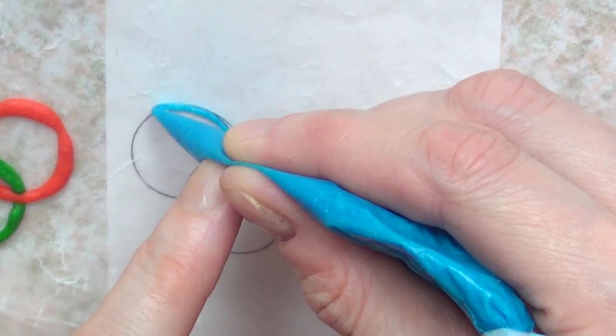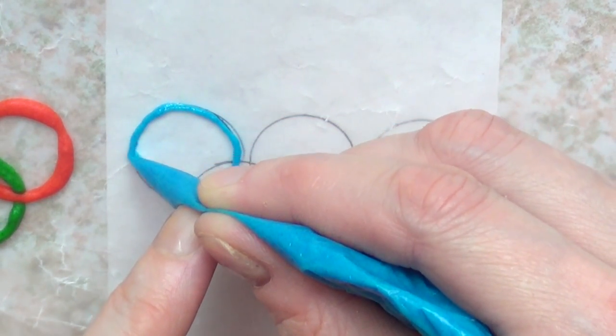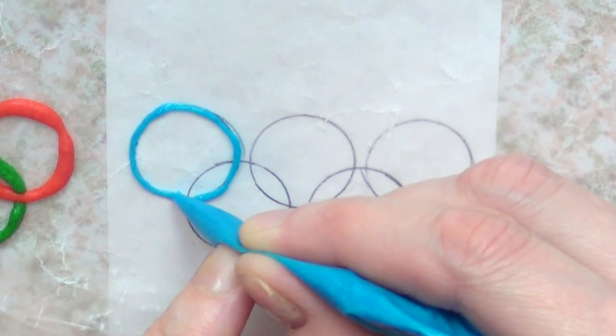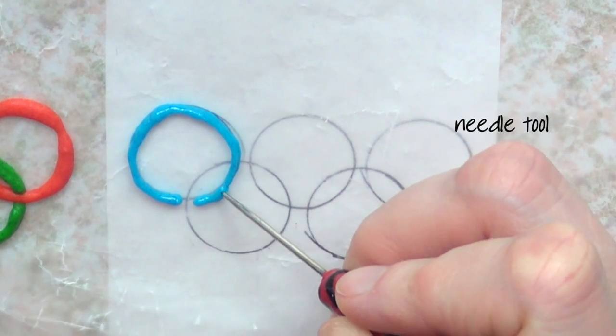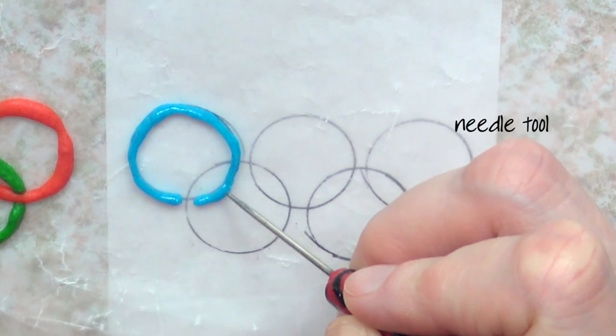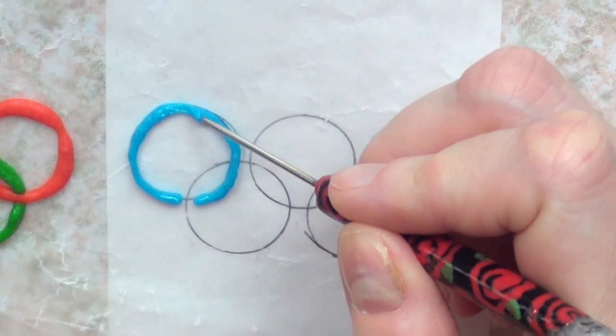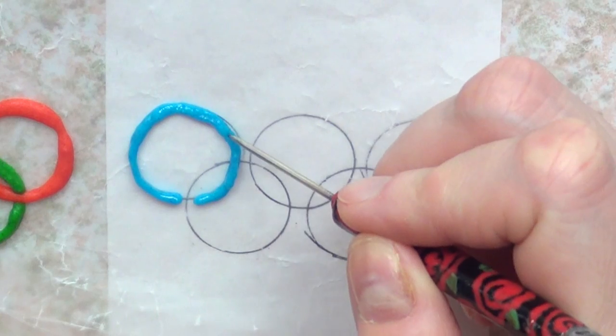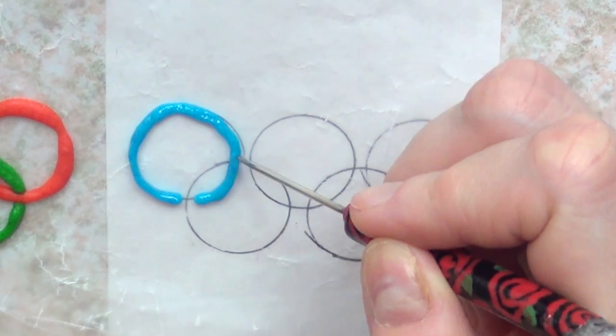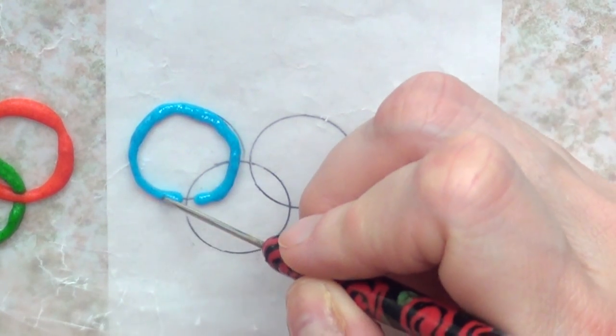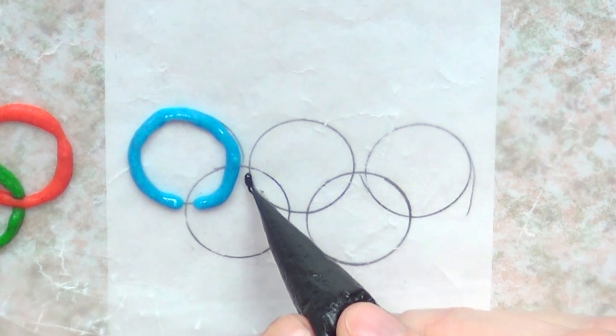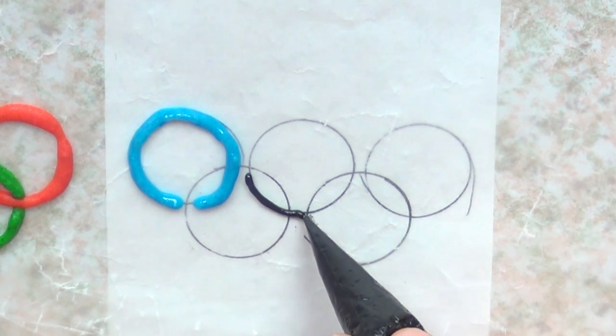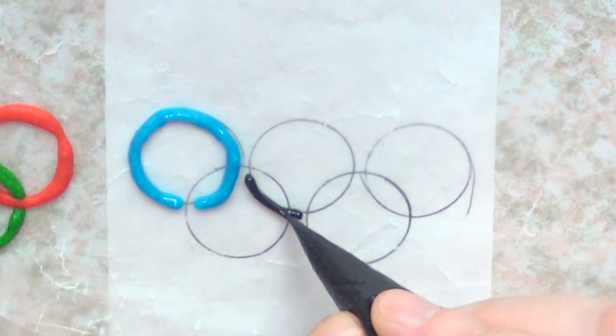I'm just going to follow the line of the circles that I drew. I'm just going to be using my needle tool to arrange the whole thing. I do have a tutorial for this needle tool just in case you want to make one for yourself. They're super easy and super handy, but if you don't want to make one, you can use a toothpick as well. Once I'm done with that one, I'm going to be moving on to the next one, which is the black one.